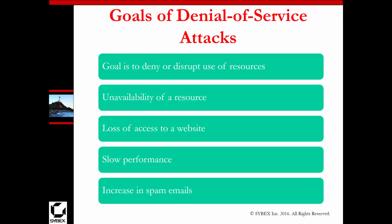What are its goals? The goal is to deny or disrupt the use of resources on a network or communication. If the resources are disrupted or denied, they become unavailable, and that can relate to loss of access to a particular resource — for example, a website, a shared drive, or shared files over the network.